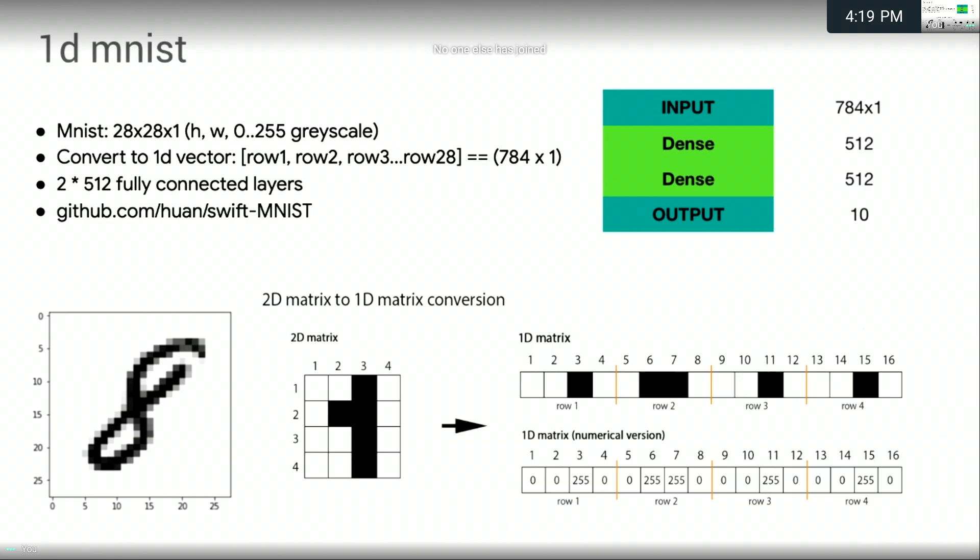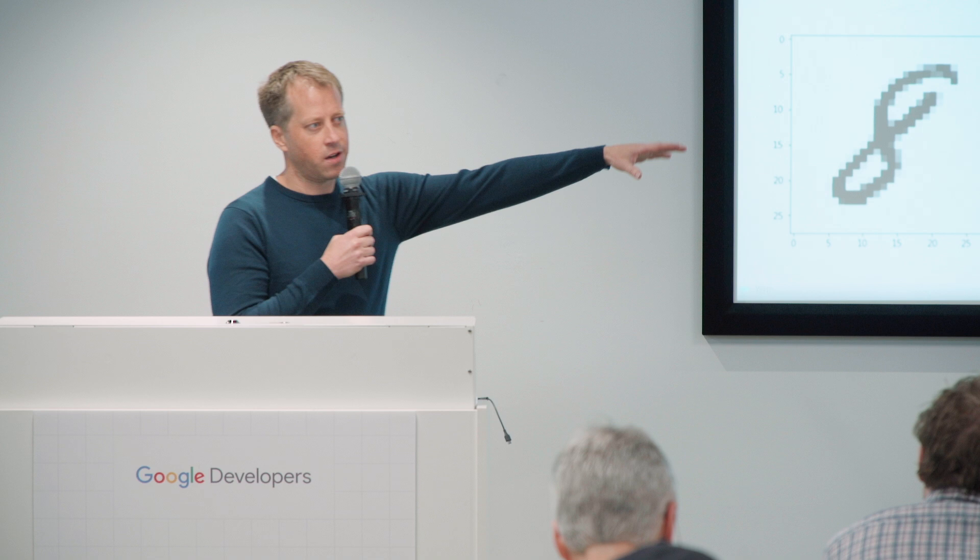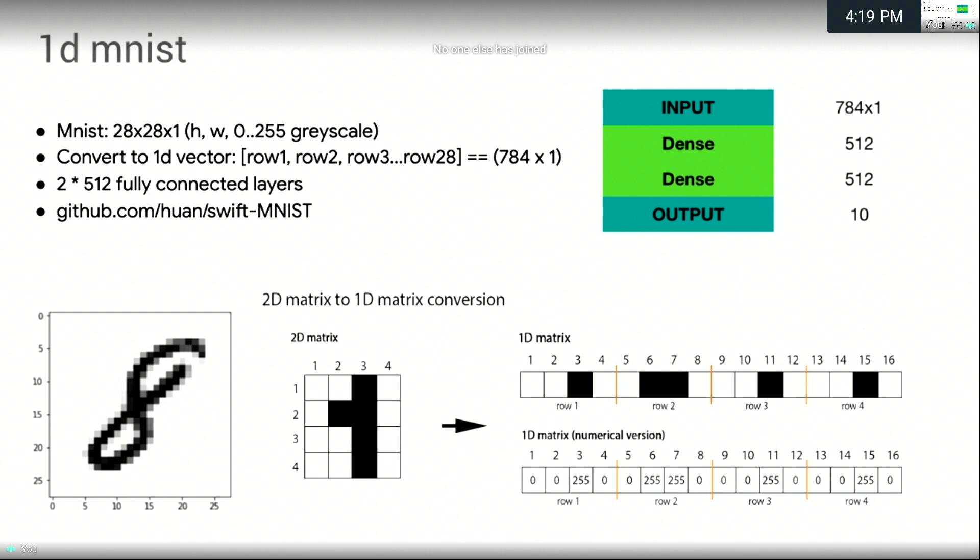So MNIST is a well-known dataset in this field. It's a collection of hand-drawn images converted to grayscale. The images are 28 pixels across by 28 pixels down, but we're not even going to treat it as an image. So what we're going to literally do is take each row of the MNIST dataset and convert it into an extremely long vector. Then we're literally going to take this vector, which is 28 by 28, or 784 rows long, and run it through two 512 densely connected neural network layers. And then finally, at the end, we're going to map it to 10 different categories, the numbers 0 through 9.